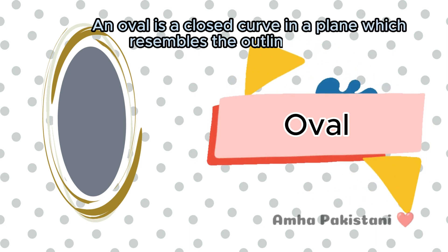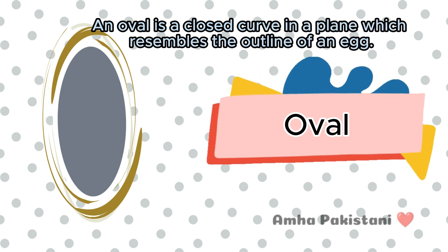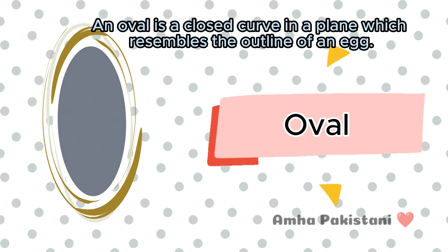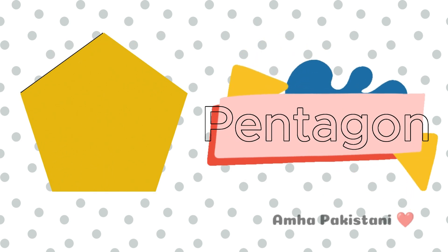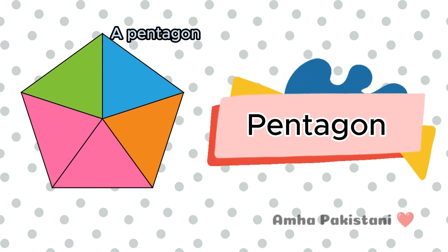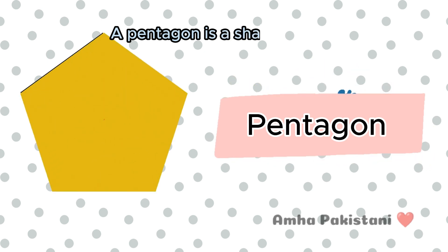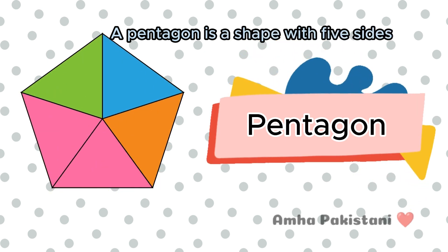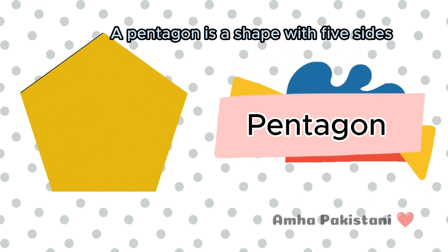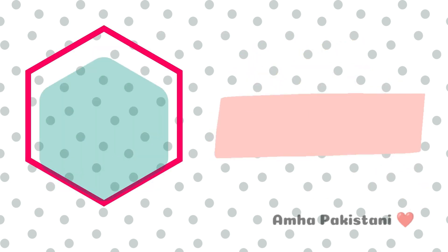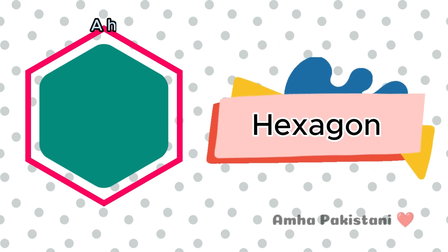Oval. An oval is a closed curve in a plane which resembles the outline of an egg. Oval. Pentagon. A pentagon is a shape with five sides. Pentagon.